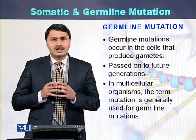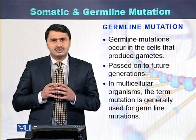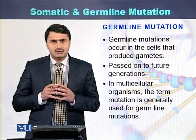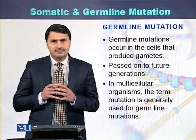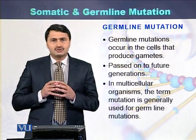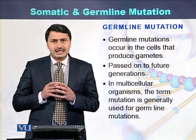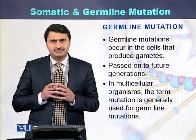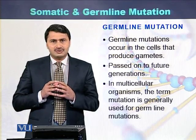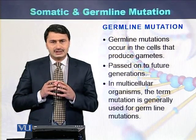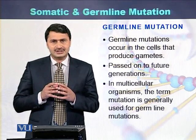On the other hand, germline mutations are those mutations which occur in the sex cells — those cells which produce the gametes. These types of mutations pass to the next generations.